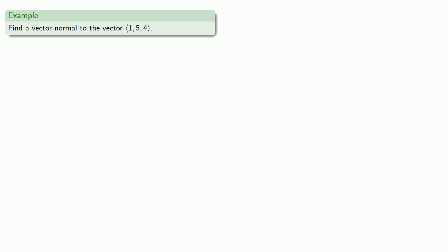So for example, we can talk about finding a vector normal to the vector (1, 5, 4). We don't typically use this language, we just say find a one that's orthogonal, but we could.